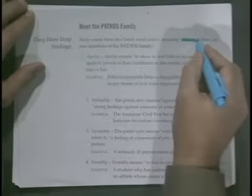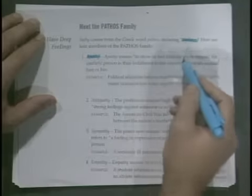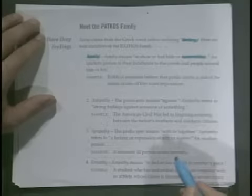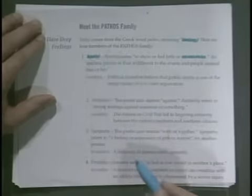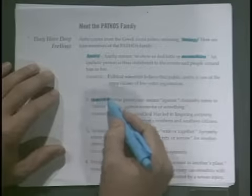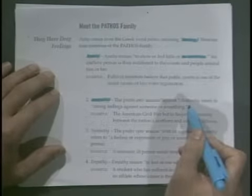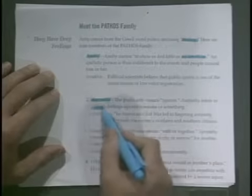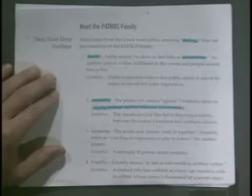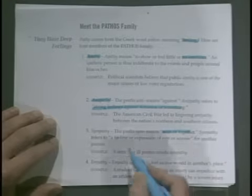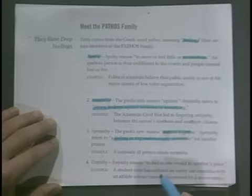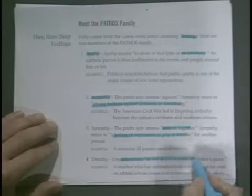Pathos. Pathy comes from the Greek word pathos meaning feeling. Apathy means to show no feelings, no emotions — a means not, so apathy means no emotions. Antipathy: anti means against, pathos means feelings, so antipathy means strong feelings against someone. The prefix sym means with or together, so sympathy is feelings with or sorrow for someone. And then empathy means to feel in someone else's place.